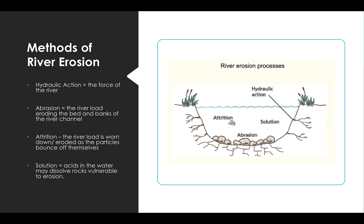When we're looking at the feature of erosion, we're looking at the processes of erosion involved. You can see the different methods identified: hydraulic action, abrasion, and solution are the three methods that affect the formation of a waterfall. Attrition is slightly different, and we'll talk about that in a second.